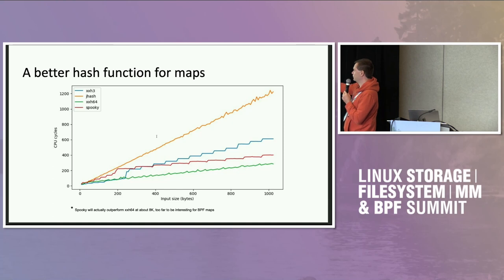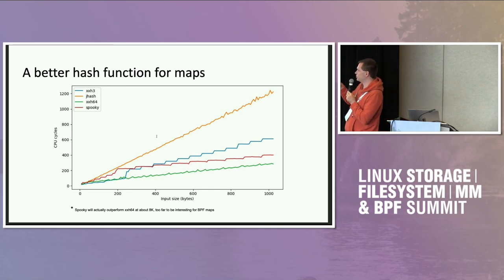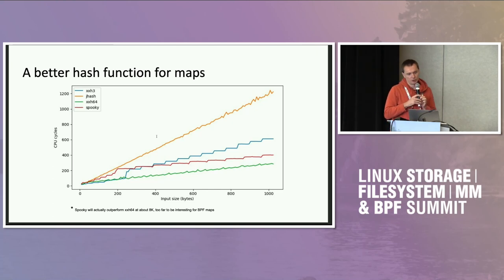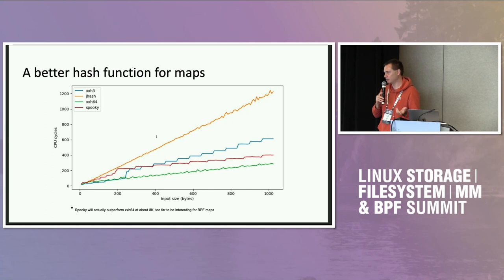The blue line is xxh3, and it starts at key size 240 to underperform compared to the previous generation — xxh64 and xxh32 — because at this key size the original implementation switches from scalar to vector implementation, and the scalar implementation is not very good.